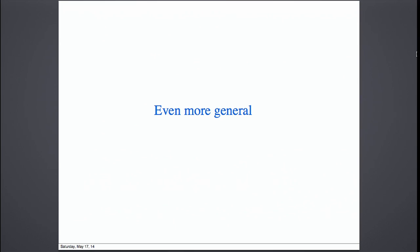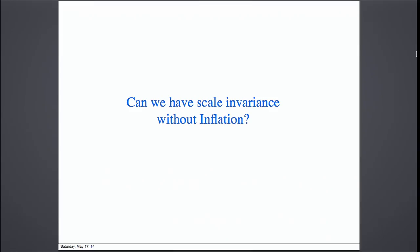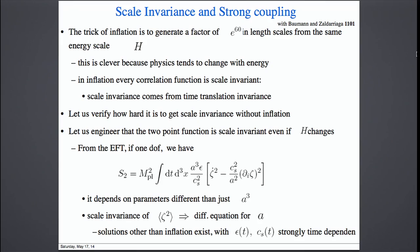Let me be even more general and ask: can we have scale invariance without inflation? I would like to prove that if we detect scale-invariant tensor modes, then it must be inflation. Let me first ask about the scalar sector. The trick of inflation is to generate a huge amount of scale — like e^60 factors in length scale — from the same energy scale Hubble. This is very clever, because in general physics tends to change with energy. But in inflation, all modes are produced at the same energy, and scale invariance is just inherited by the time-translation invariance of the system.